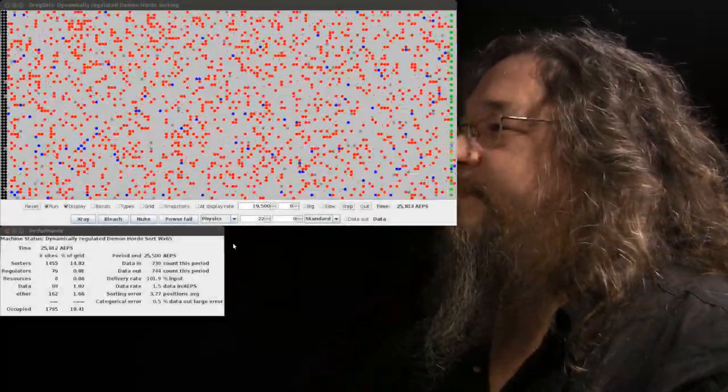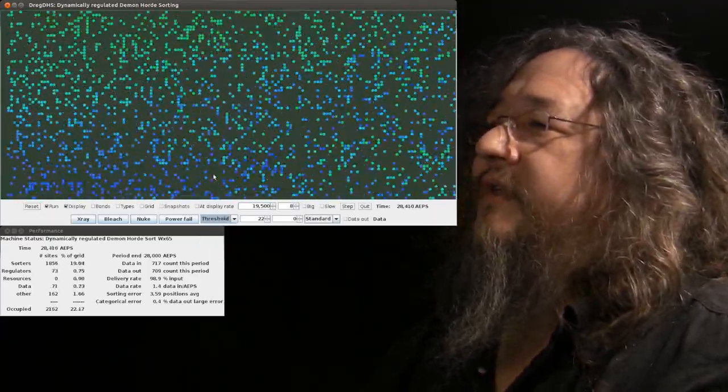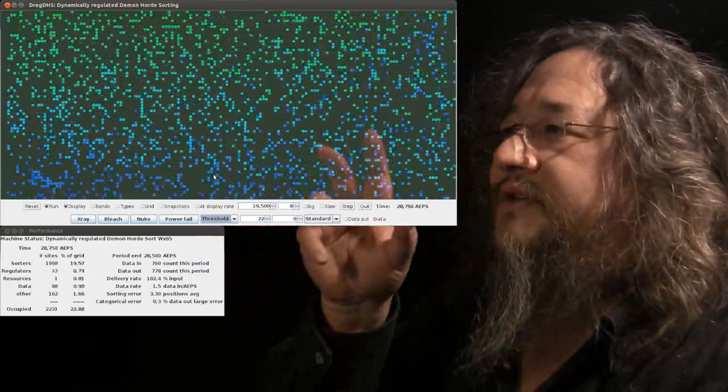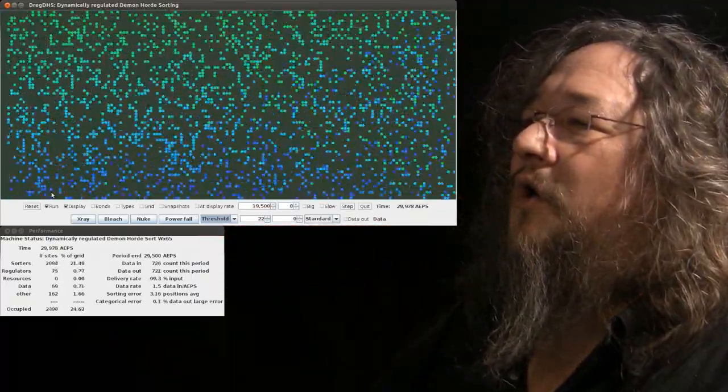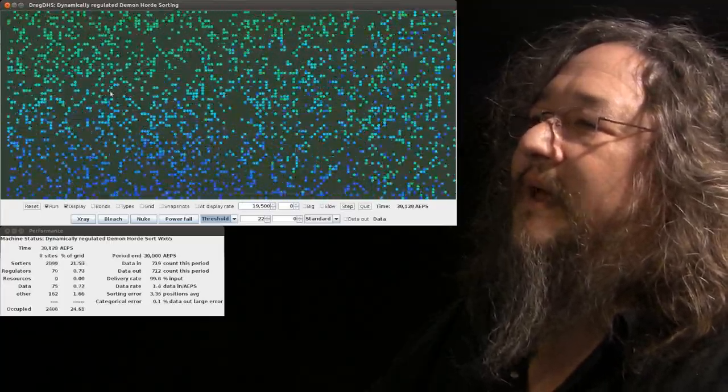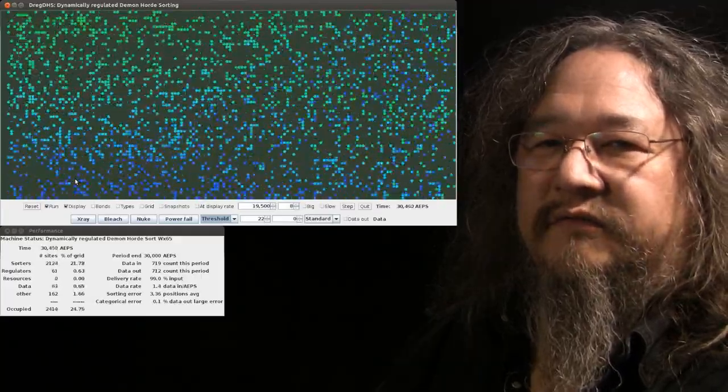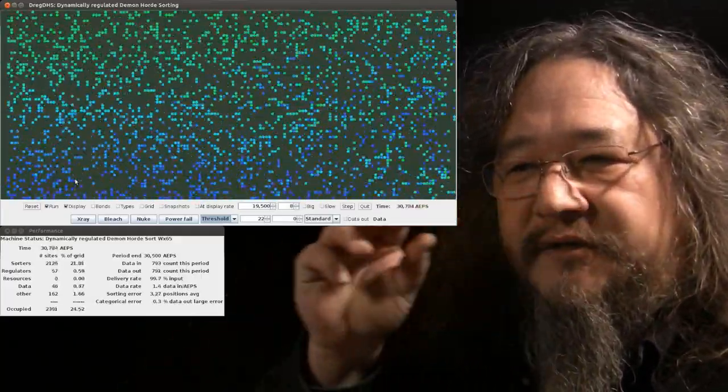One last point. Here, this is a picture that's showing just the sorters. But instead of showing them as red, it shows them colored by what their threshold is. You know, it looks like there isn't a whole lot happening in the last third of this grid. The colors seem fairly uniform. But they're making increasingly fine distinctions.